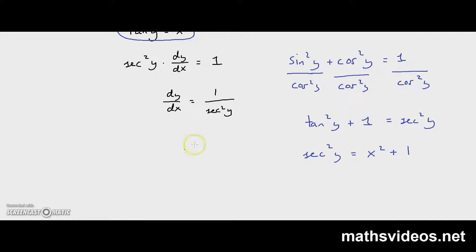And this means that dy over dx is equal to 1 over x squared plus 1. And that is y equals arctan x differentiated.